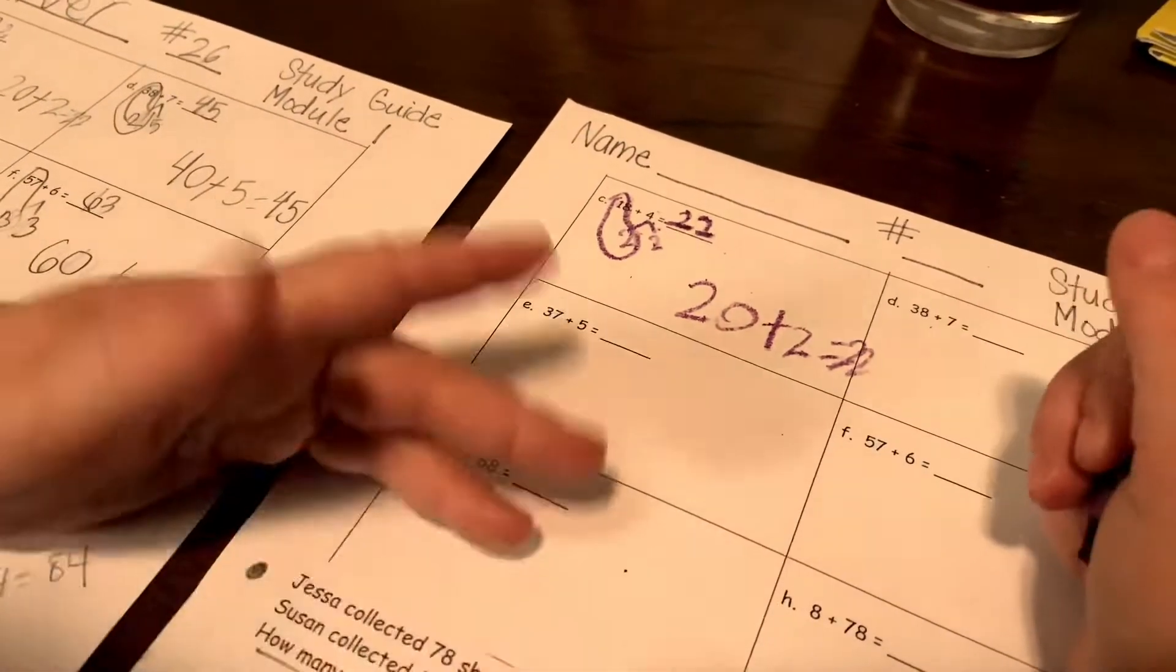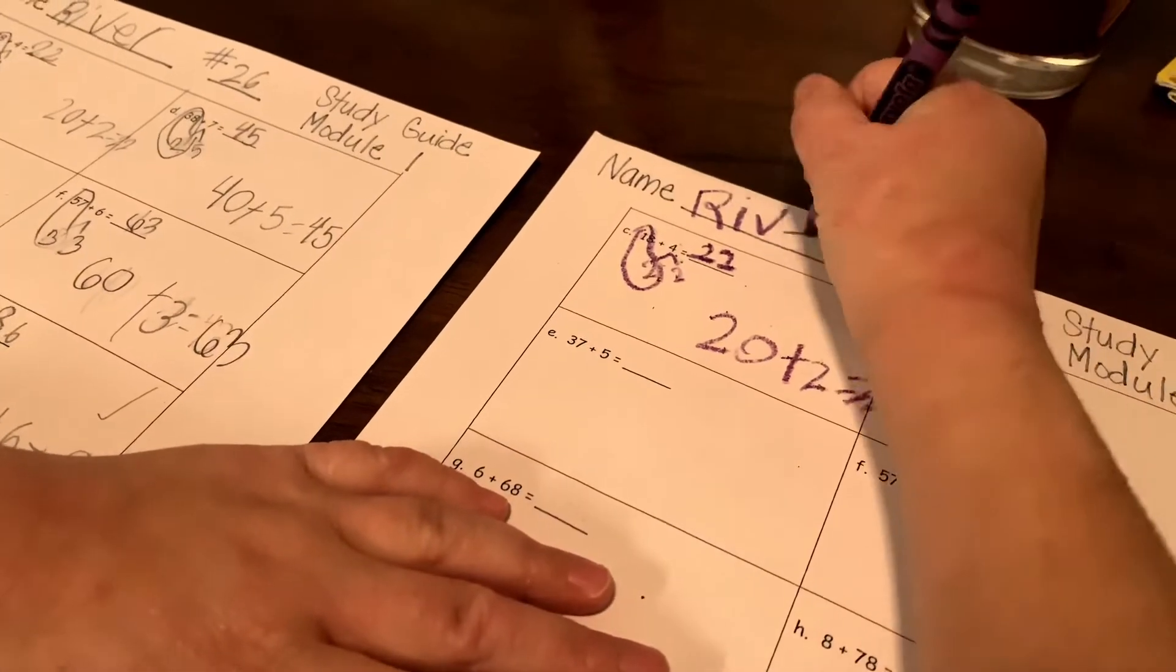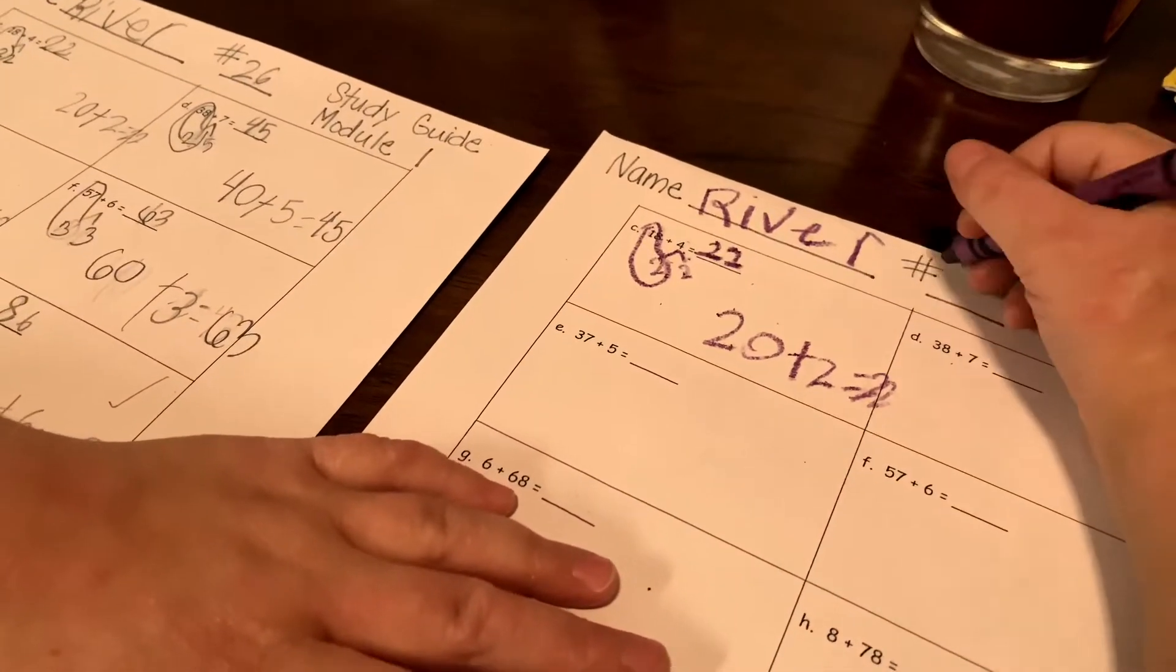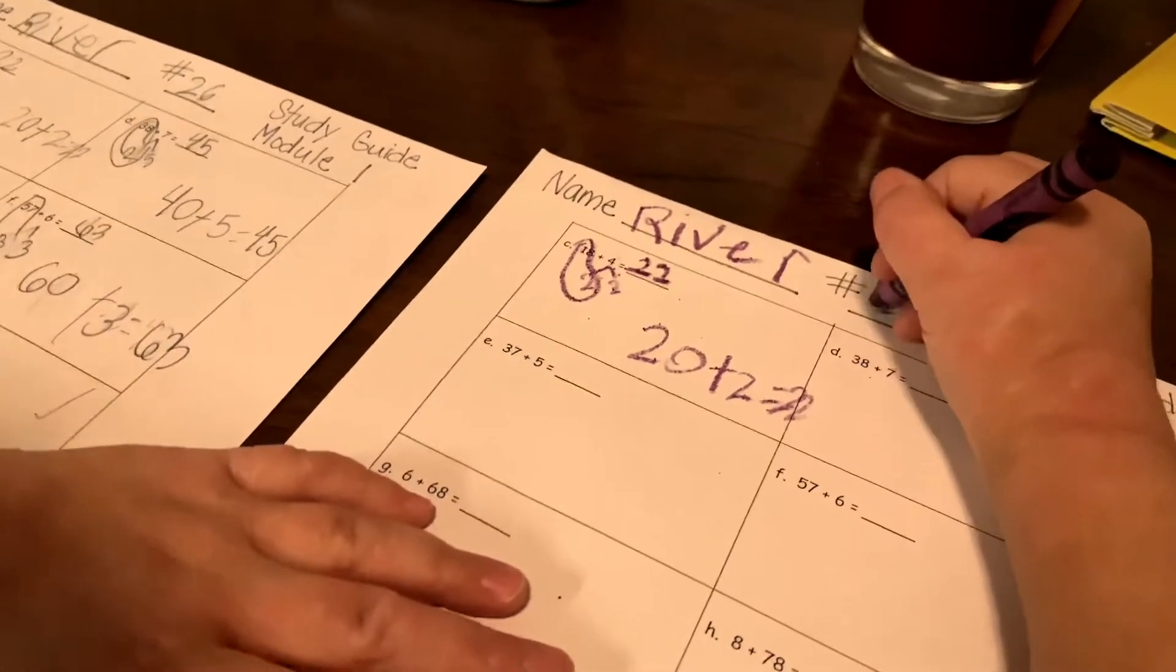There, easy. So that's how you do it. Wow. Can you just tell my teacher we didn't have a pen for this, okay? So we're using a crayon.